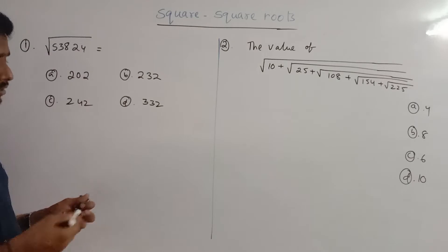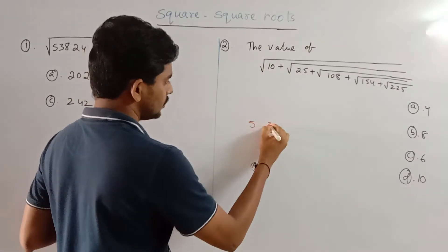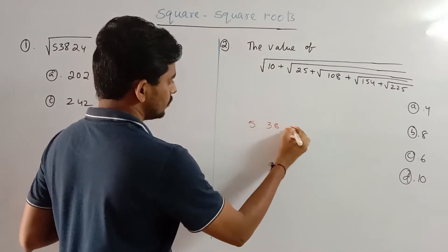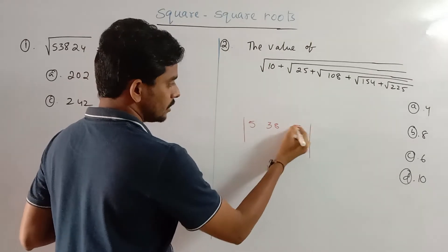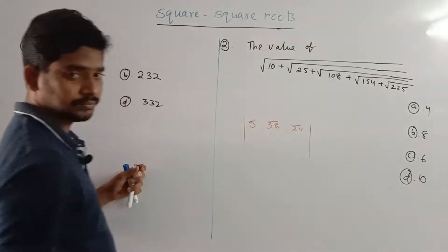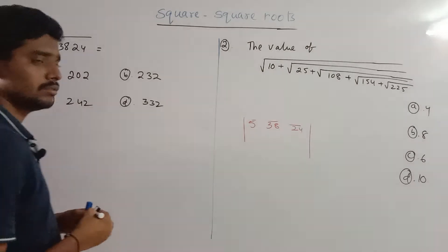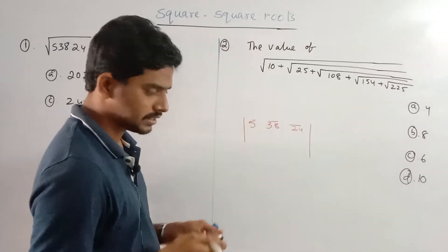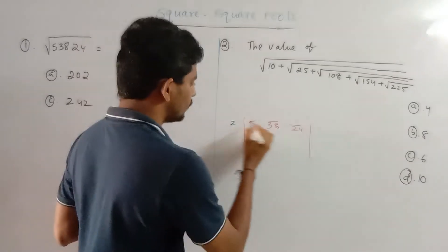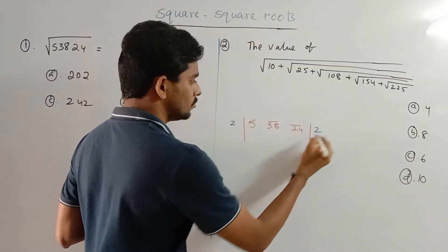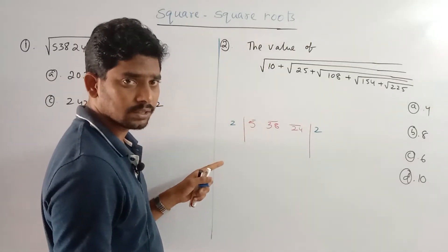The number we are working with is 53824. You can set the numbers by grouping the digits in pairs from right to left.